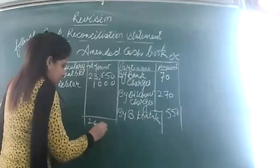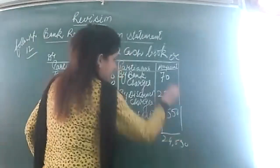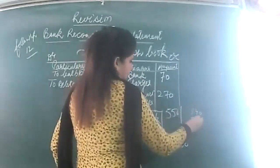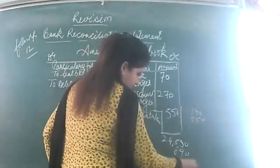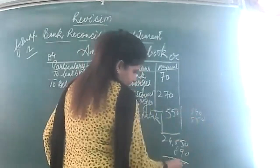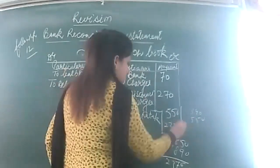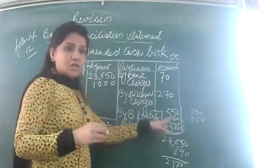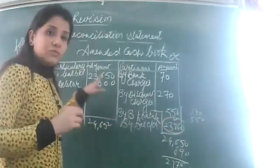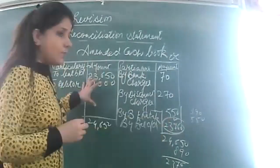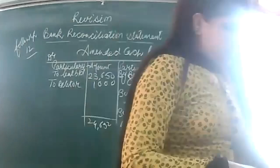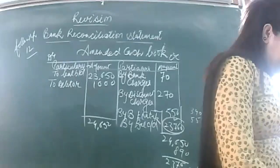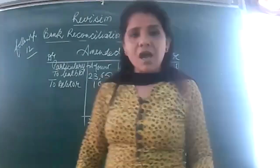These are the transactions which were not entered earlier in my cash book — now I have updated it. With rupees 550, the debit side totals to 24,650 and the credit side also totals to 24,650. After deducting, the closing balance of my cash book is 23,760. Since the receipt side is greater than the payment side, it is a positive balance. The items I have not yet entered will now go into the BRS.